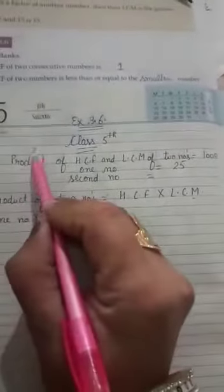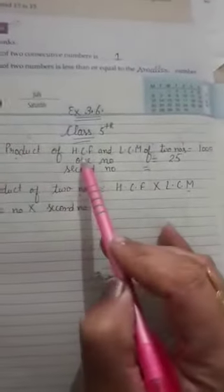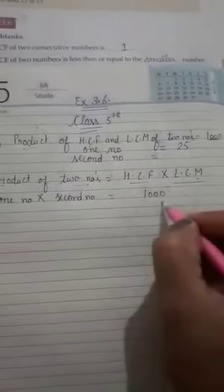Product means multiply. Multiply of HCF and LCM of two numbers is equal to 1000. HCF multiply by LCM value given 1000.